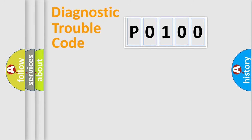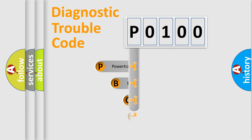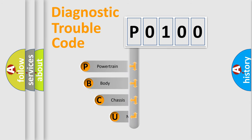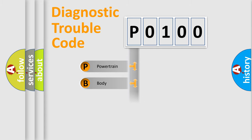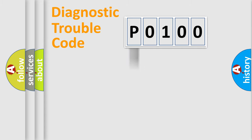Let's do this. First, let's look at the history of diagnostic fault code composition according to the OBD2 protocol, which is unified for all automakers since 2000. We divide the electric system of an automobile into four basic units: Powertrain, Body, Chassis, and Network.